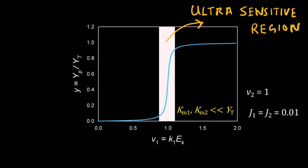The second region is the ultrasensitive region. Here y changes very fast for small change in v1. Many enzymatic systems, particularly those in cell signaling, show such ultrasensitive on-off behavior.